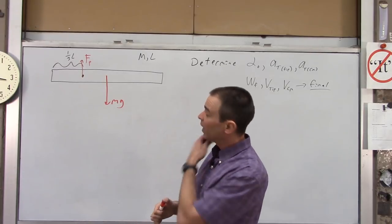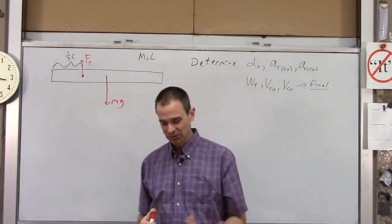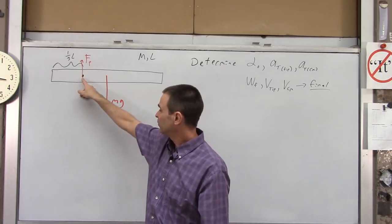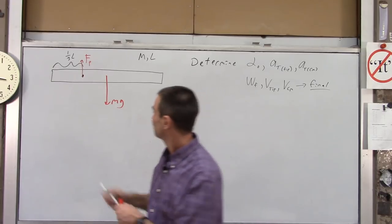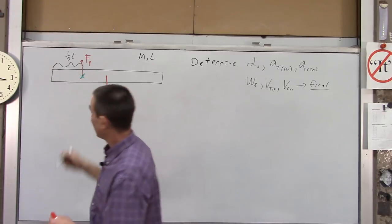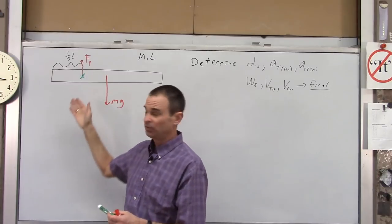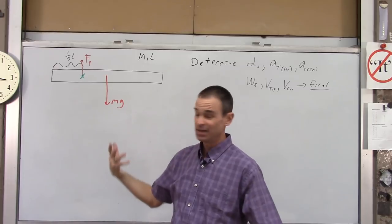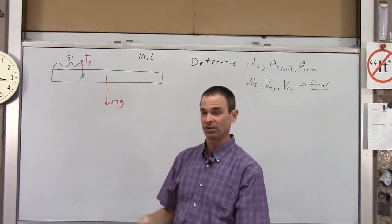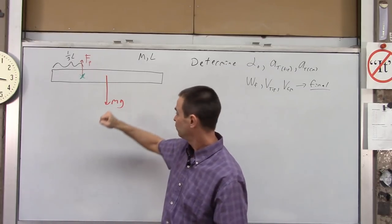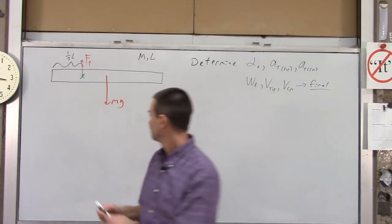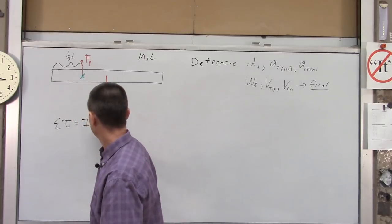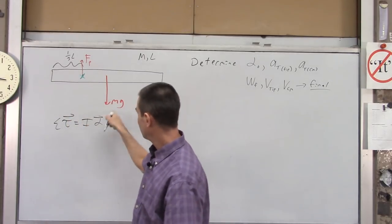I can pick any point to compute the net torque, so I'm going to find the net torque about the axis. If I do that, the pin force doesn't cause any torque — its line of force goes through the axis of rotation, meaning it has a zero lever arm. So the only thing causing torque is mg. Net torque equals I alpha.